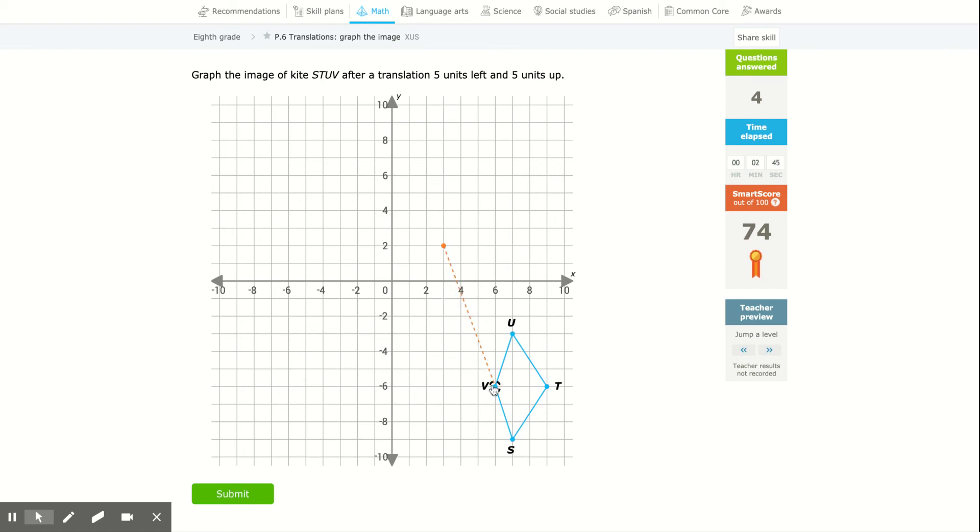And again, this point's at 6. So 5 units would be 1. I'm at negative 6. 5 units would be negative 1. And that does not look right. Wow. See, I have to count sometimes. Wow. Count the square.